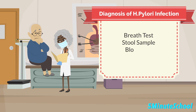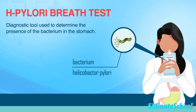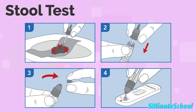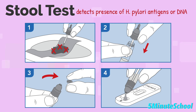To diagnose an H. pylori infection, you can use several methods. A breath test involves ingesting a substance and then breathing into a bag to measure the presence of carbon dioxide, which is produced when H. pylori metabolizes the substance. A stool test is another method, where a stool sample is analyzed for the presence of H. pylori antigens or DNA.